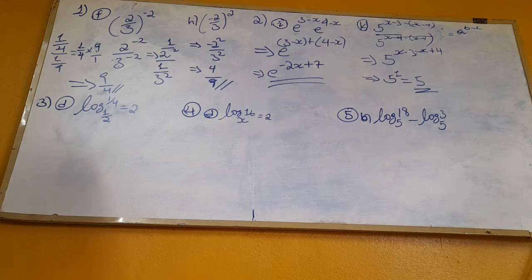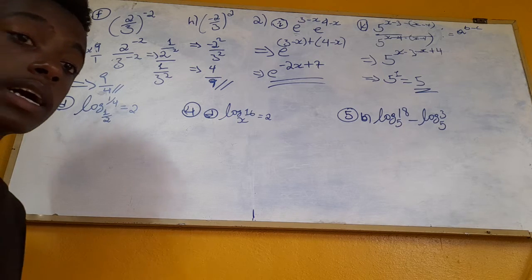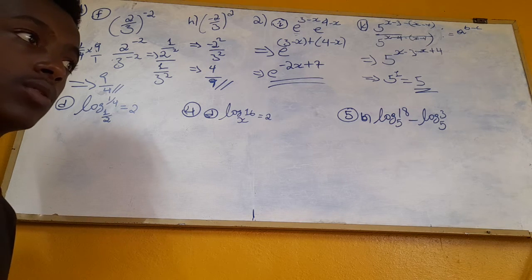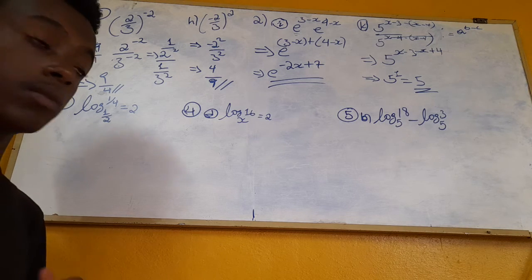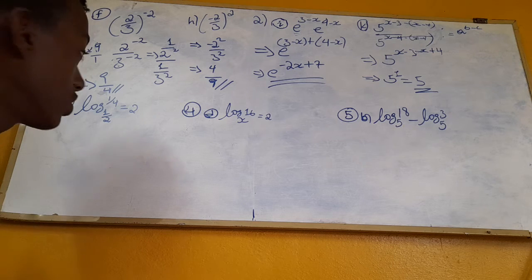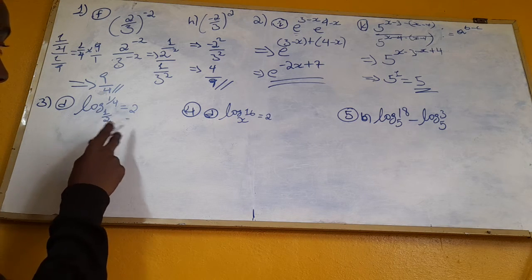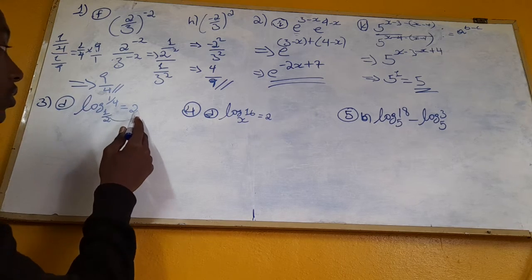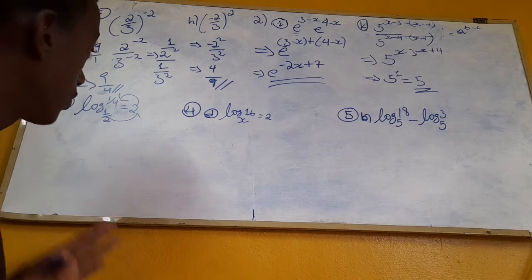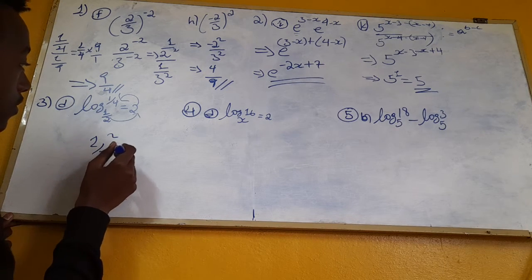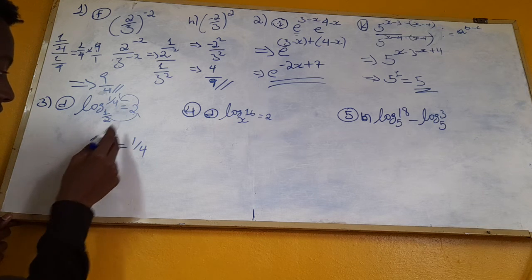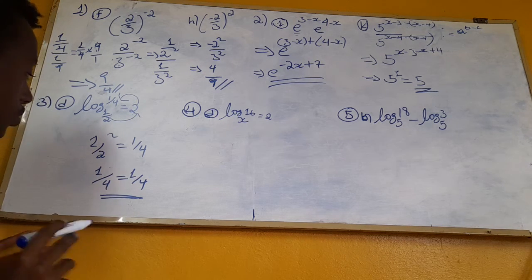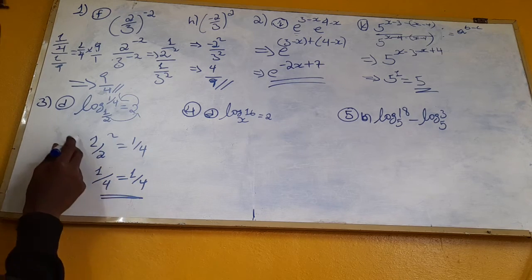Log of 1 over 4 to the base 1 over 2 is equal to 2. Using exponential form: (1/2) to the power of 2 gives 1 over 4. Since 1 squared is 1 and 2 squared is 4, we have 1 over 4 equals 1 over 4. This confirms the logarithm using the exponential rule.